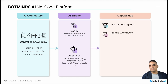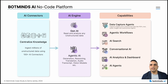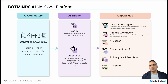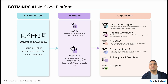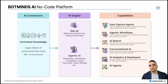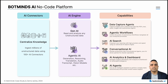Our third pillar is the capabilities. We offer six different capabilities as part of the platform: data capture, which captures information from any complex unstructured document; agentic workflow, which builds autonomous workflows leveraging the output of one agent as the input for the other; AI search, which allows you to search through your document repository; conversational AI, your co-pilot on top of your documents; AI analytics and dashboard for real-time operational insights; and finally, AI agents — sets of assistants available to perform complex tasks autonomously.